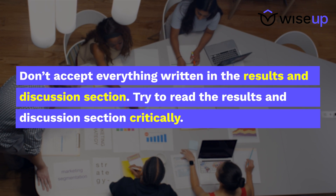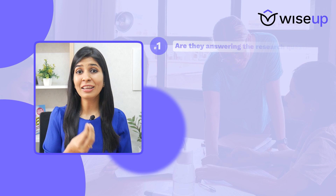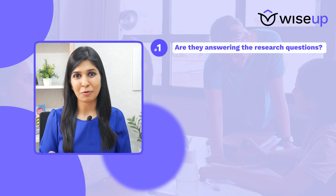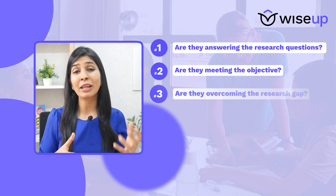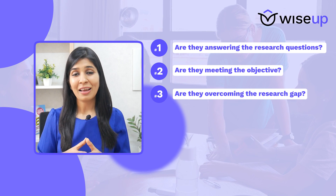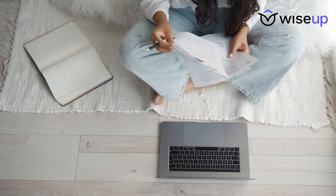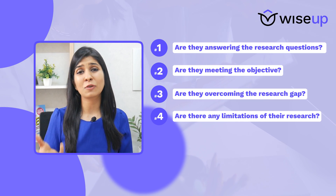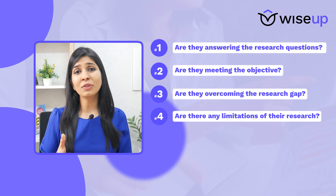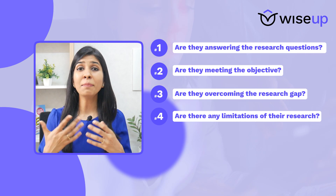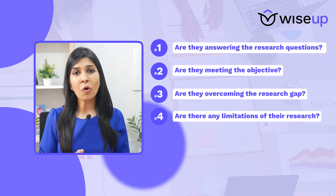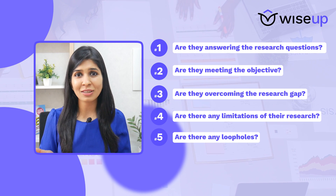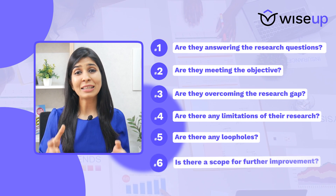Read the results and discussion section critically. Analyze whether they are answering the research questions they stated before, whether they are meeting their objective, and whether they are filling the research gap they stated in the beginning. Also think about whether there are any limitations in their results or discussion. Most of the time researchers will present their paper in a very positive light, so it is your responsibility to find any loopholes or areas where the research still has scope for further improvement.